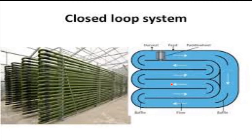The term photo bioreactor is used to indicate a closed system that does not allow for direct exchange of gases or contaminants between the algal culture and the environment. There are different types of photo bioreactors. These devices provide a protective environment for the cultivated species, and the culture parameters such as pH, oxygen, carbon dioxide concentration, and temperature can be controlled.